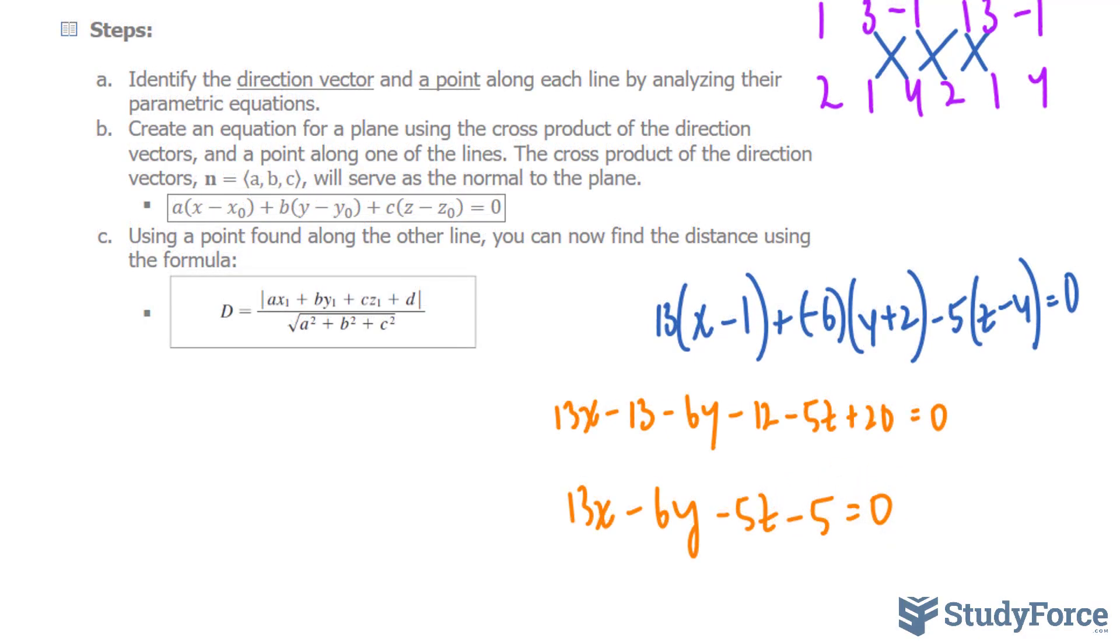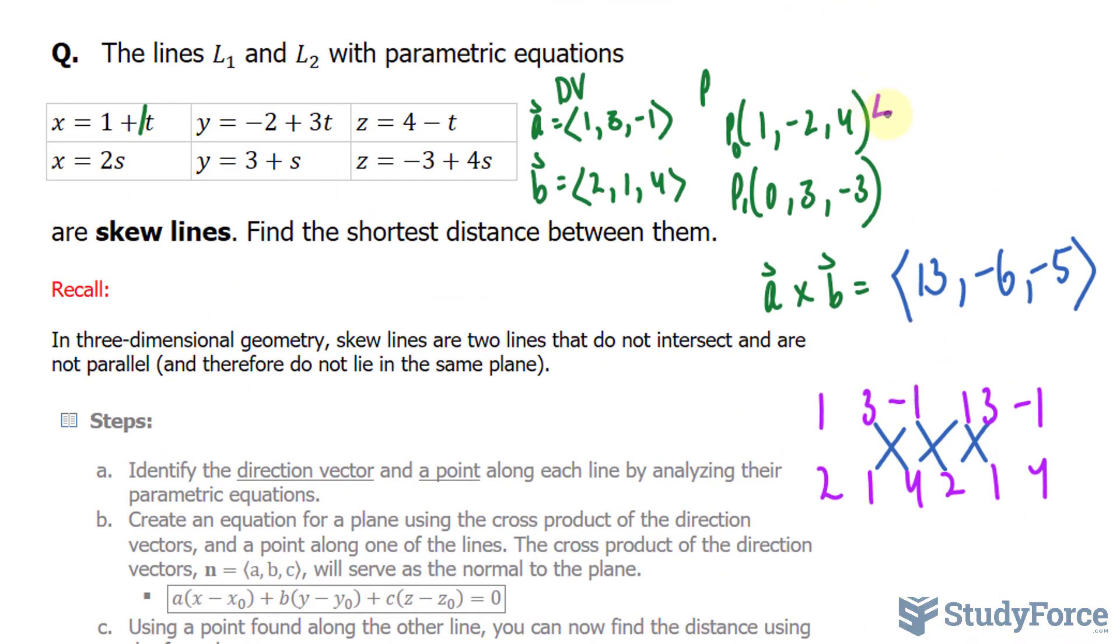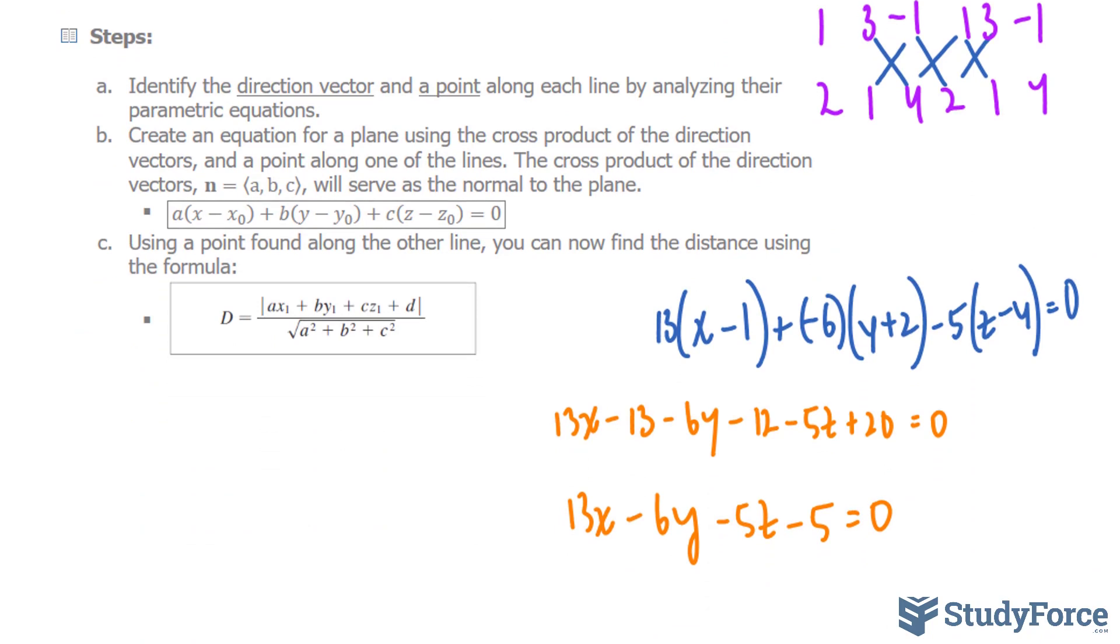Now that we've created this equation, we can move on to the last step, which tells us to use a point found along the other line. So we already used the point here. We'll use this time this point to find the distance between this plane and that point. That's done using this formula. So let's go ahead and use it.